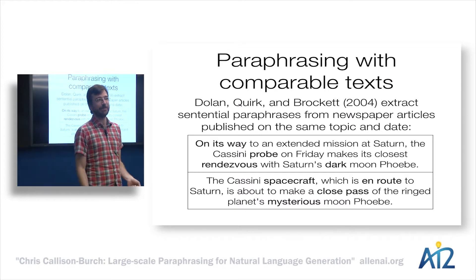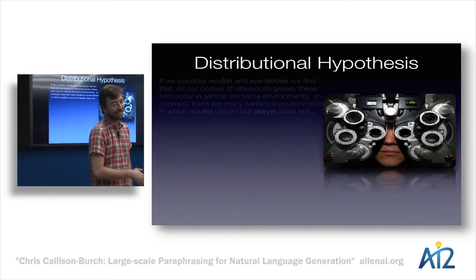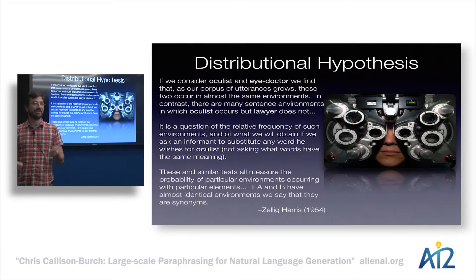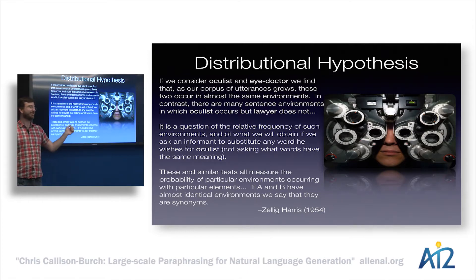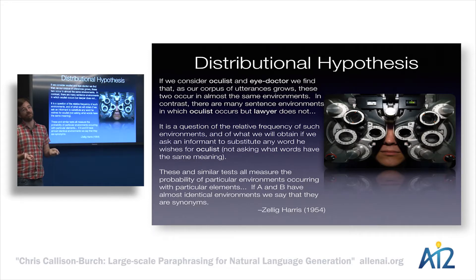We can go even further and use raw monolingual texts. There was really awesome work by Zelig Harris at the University of Pennsylvania in the 1950s, where he had the distributional hypothesis, which said: if you consider a pair of words like 'optometrist' and 'eye doctor,' as our corpus of utterances grows, these two tend to occur in very similar environments. Optometrist will occur in environments that 'lawyer' does not. So by looking at the environment in which words appear, we can say A and B are potential synonyms if they have almost identical environments.